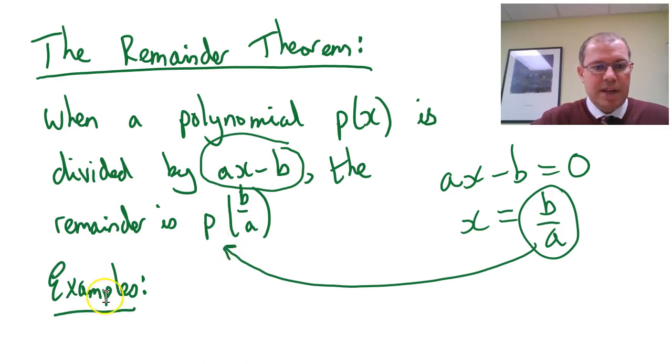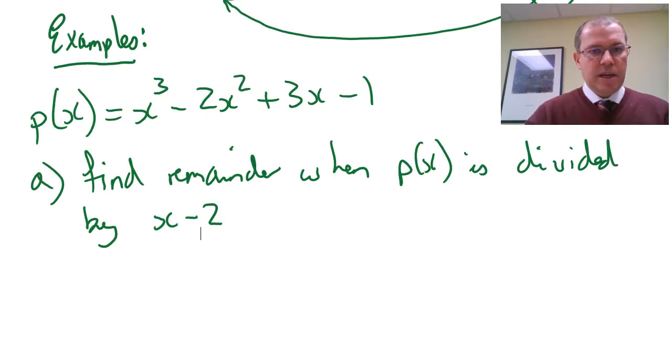Let's do an example and see what that looks like. So here we have a polynomial, x³-2x²+3x-1, and we want to find the remainder when this polynomial is divided by x-2. Now of course we could do the long division, but that's pretty long and boring. So the remainder theorem is a quick way of finding the remainder without having to do the long division.